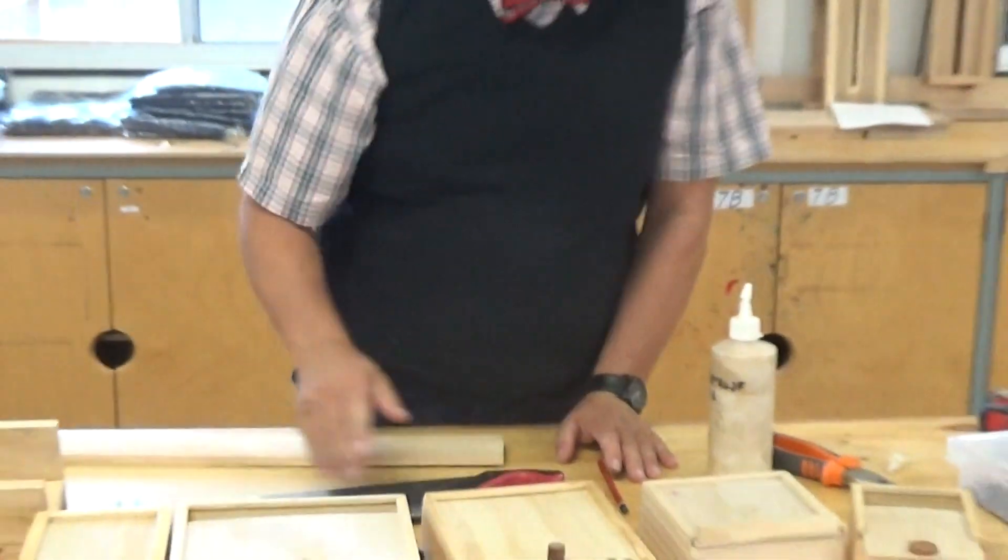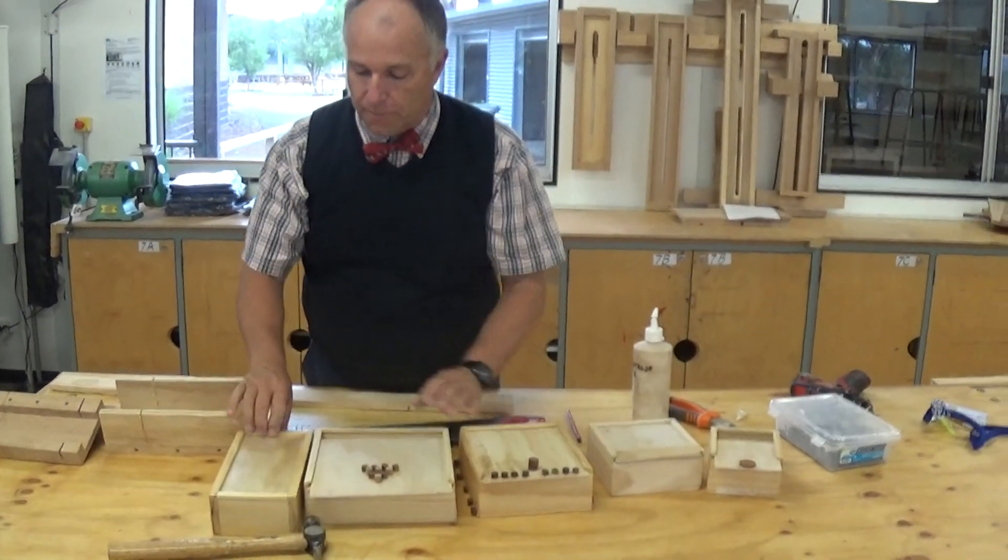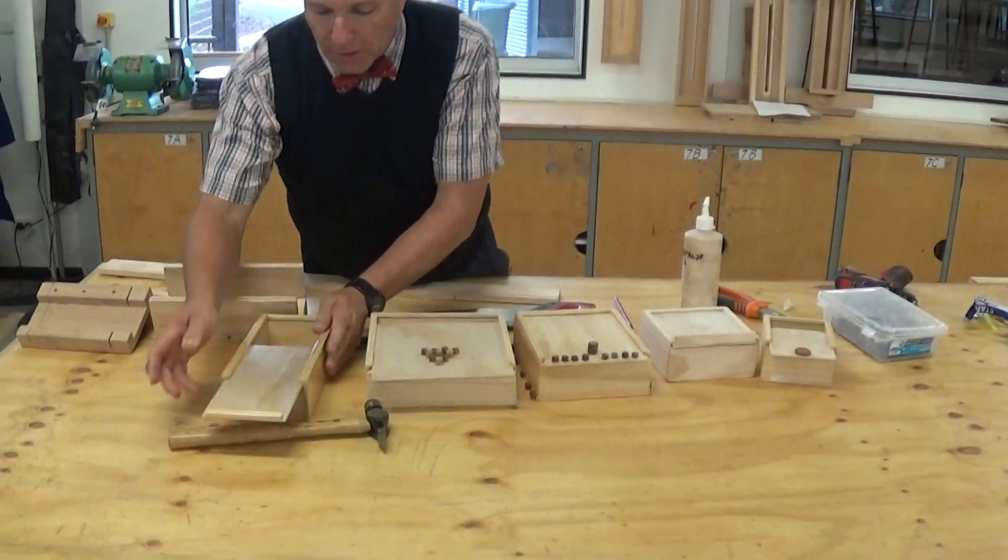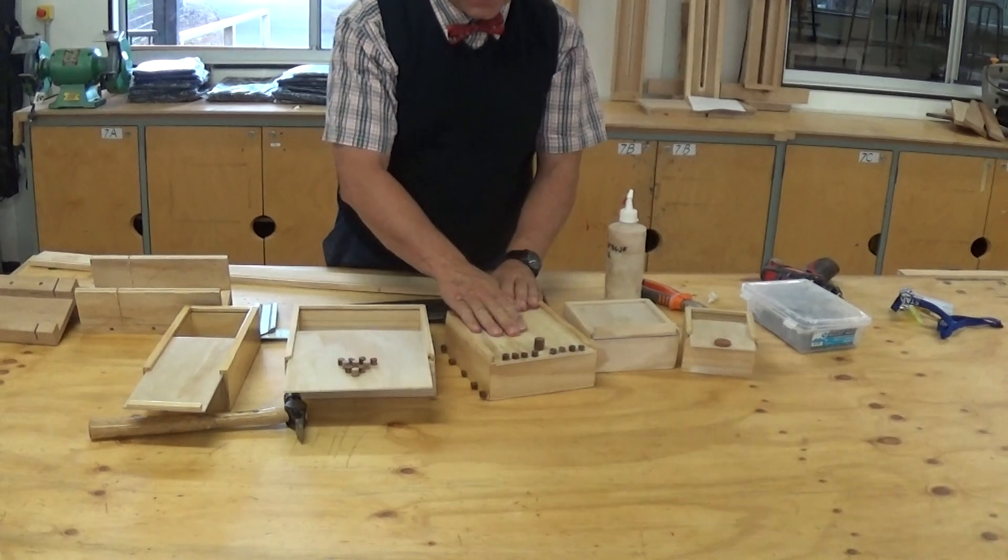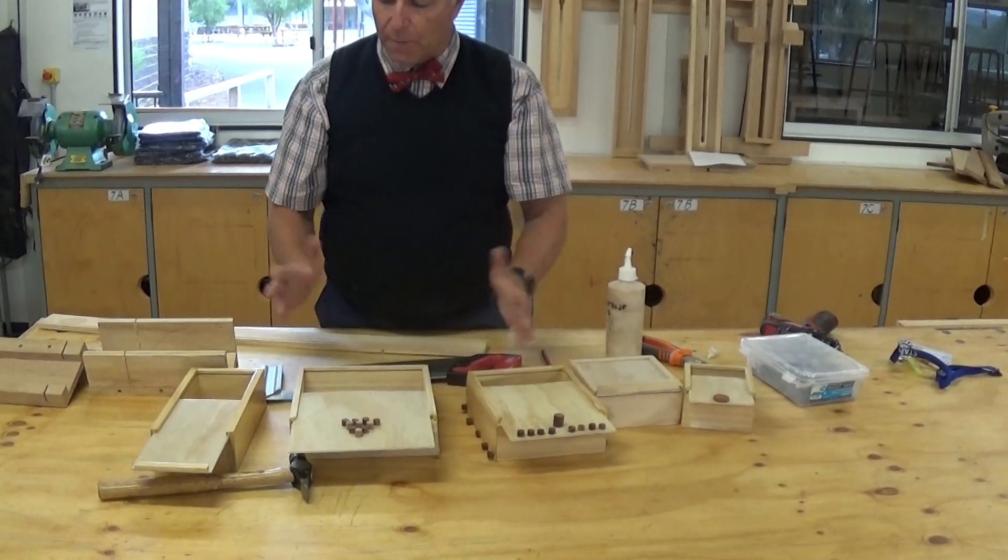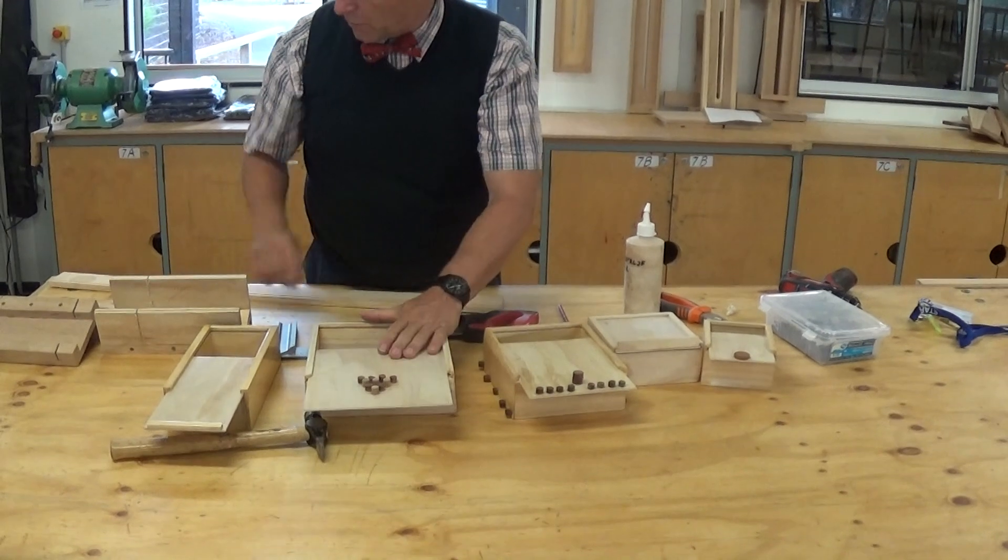At year 7 level you're going to be making a sliding lid box, but you need to choose which side you want. Here there are a variety of different sizes with a variety of decorations on them. You're going to finish them off to some degree, and this one is just about how to cut it.